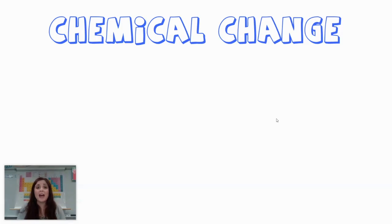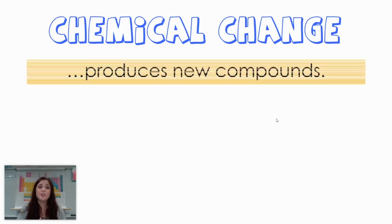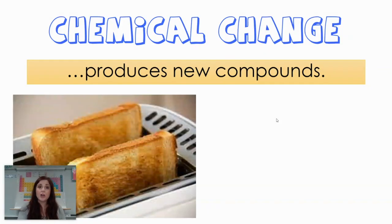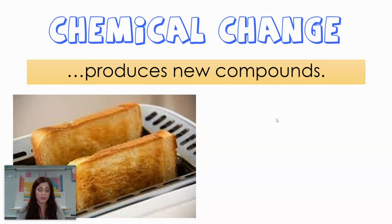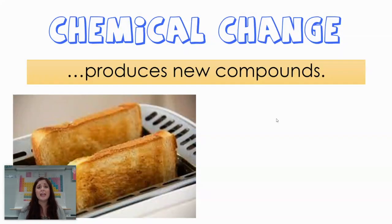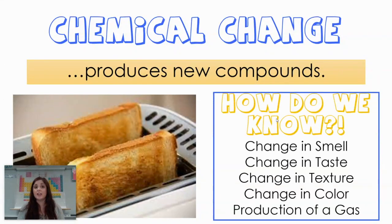On the other hand, we can also have a chemical change, and a chemical change is when you produce a totally new compound that wasn't there before. Looking at the toast example: you put bread into a toaster, it gets hot, and you start to notice changes. It gets very hard, the texture changes, you can smell it toasting, and the color starts to change. These are all pieces of evidence we can use to tell us whether a chemical change has occurred.